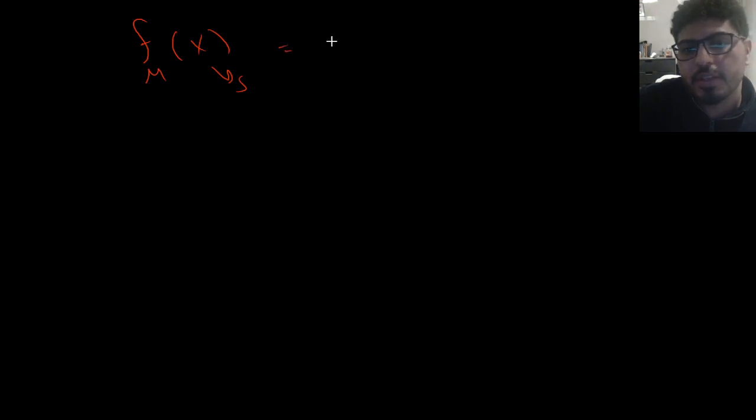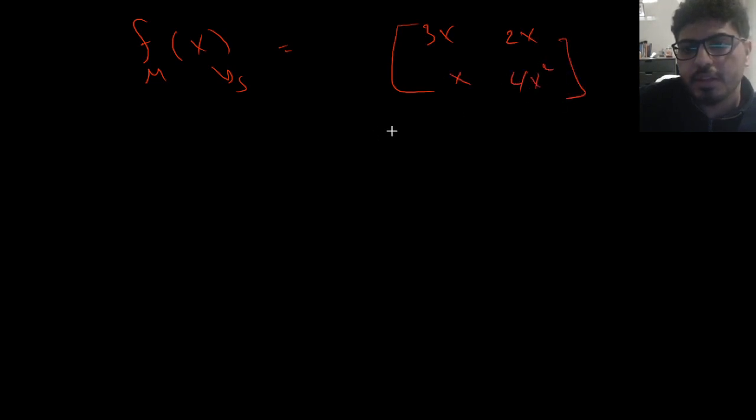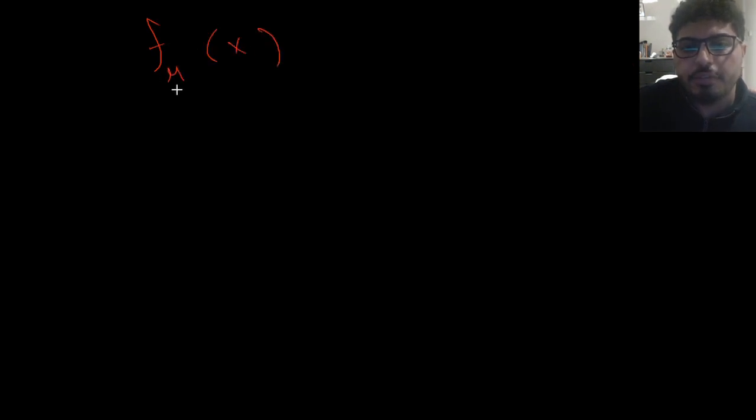Let's take a simple example: f is a matrix-valued function and x is a scalar. An example could be f(x) = [[3x, 2x], [x, 4x²]]. Taking the derivative: f'(x) = [[3, 2], [1, 8x]].